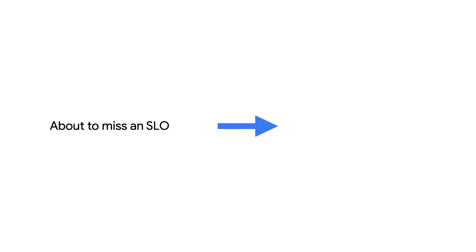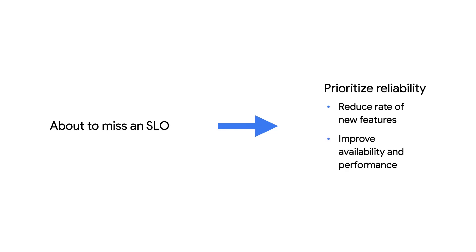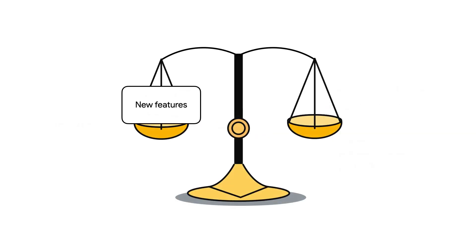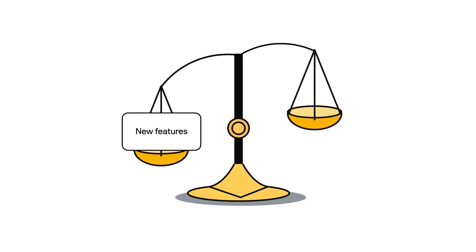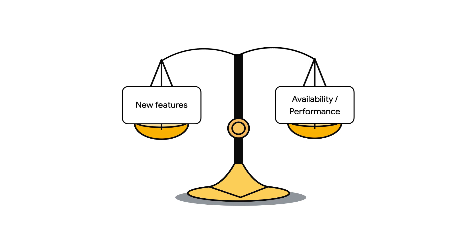But what if we miss our SLO? That is a very valuable signal telling us to increase the priority of reliability work. That will do two things: first, it will reduce the rate of new features added to the service, which will increase stability. Second, it will give us time to work on improving availability and performance. Once we meet our SLO, we can prioritize new features again. Any organization creating software always has a difficult choice — should we add new features, which often hurts performance and availability, or should we improve stability? If we make the wrong choice we will waste resources. But SLOs tell us which activity to prioritize.